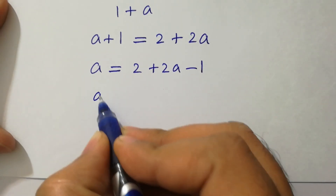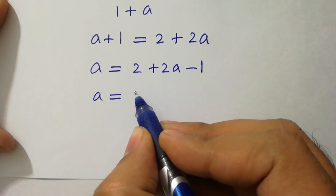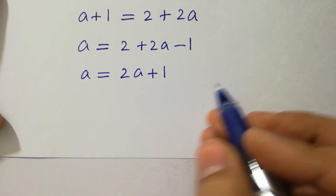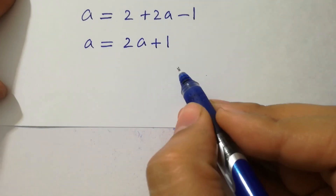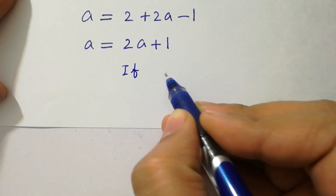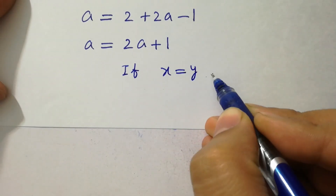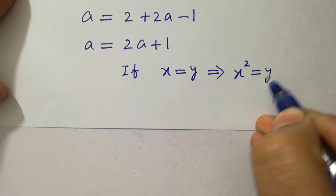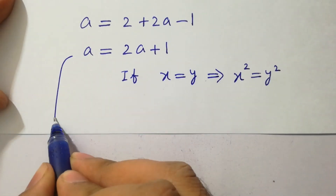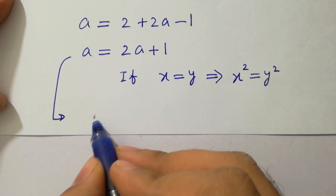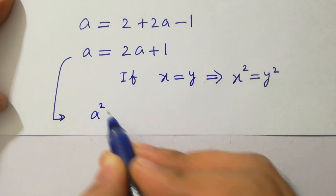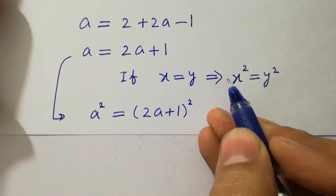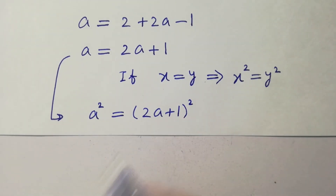We have a - 1 = 2a + 2 - 1, giving a + 1 = 2a + 1. As we know, if x = y then x² = y², so we can take the square on both sides: a² = (2a+1)².